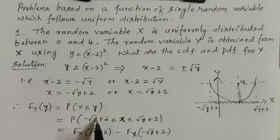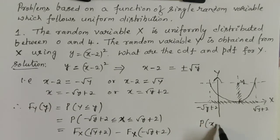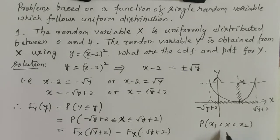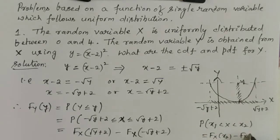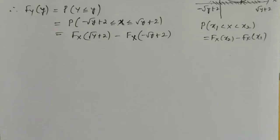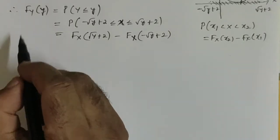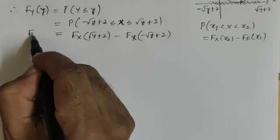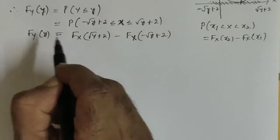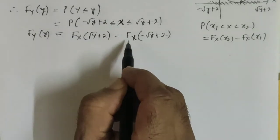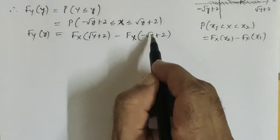The lower limit is 2 - √y, because we know that probability that X₁ < X < X₂ equals F_X(X₂) - F_X(X₁). Therefore, the cumulative distribution function of Y is F_Y(y) = F_X(√y + 2) - F_X(-√y + 2).